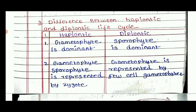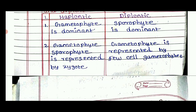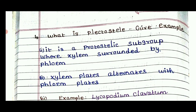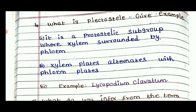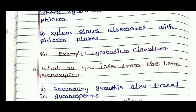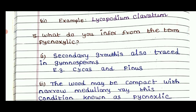You can get the life cycle — gametophytic phase and sporophytic phase. Gametophytic and sporophytic — this is represented by a diagram. What is plectosteel? Give an example. It is a protostelic subgroup where xylem is surrounded by phloem. Xylem plates alternate with phloem plates. The best examples are Lycopodium and Selaginella.